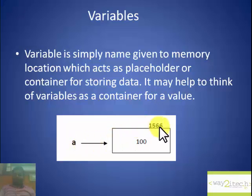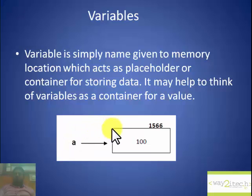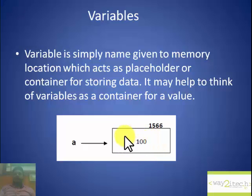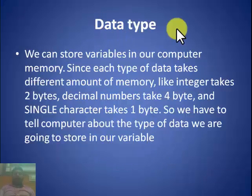So a variable is pointing to address 1566 and it's storing the value 100. To repeat the definition: a variable is a name given to a memory location. This memory location acts as a placeholder or container to store data. The size of this placeholder and what type of data it can store will be determined by the data type.